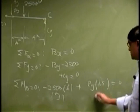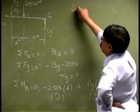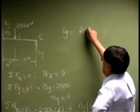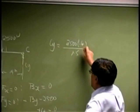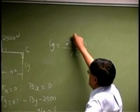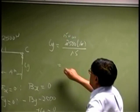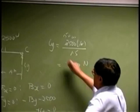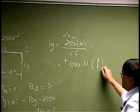So that should give us the reaction CY, that is 2500 times 0.6 over 1.5, so that is 1500 over 1.5, so that should be 1000 Newton. Came out positive, so that keeps going up.